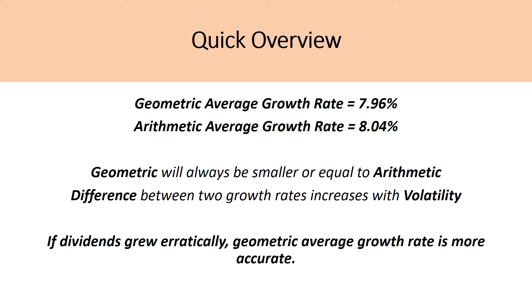A quick summary: the geometric average growth rate was 7.96% and the arithmetic average growth rate was 8.04%. We can now define two important rules: first, the geometric average growth rate will always be smaller than or equal to the arithmetic average growth rate; and second, the difference between these two growth rates increases with volatility. So if dividends grew erratically, the geometric average is much more accurate because it captures that volatility, whereas the arithmetic average smooths out the growth rates and inaccurately captures erratic growth.